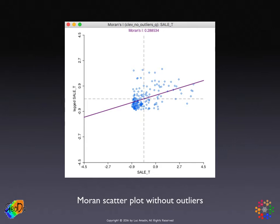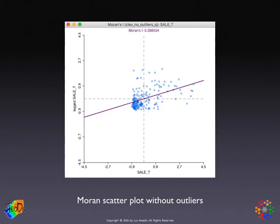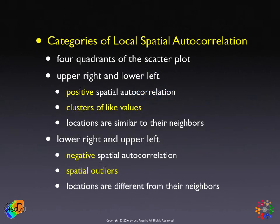The second step is to focus on the four quadrants in the scatterplot, defined by the dashed lines going through the center. In the upper right and lower left, values above the mean have neighbors also above the mean, or values below the mean have neighbors also below the mean. This is evidence of positive spatial autocorrelation — clusters of like values where locations are similar to their neighbors.